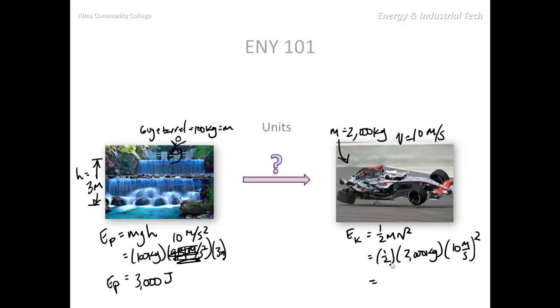Let's see, 1 half times 2,000, that's 1,000 kilograms. 10 squared is 100, so that's 100 meters squared per second squared. So 1,000 times 100, well, that sounds like 100,000 joules. Pretty significant difference between this number and this number.